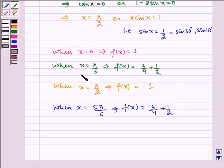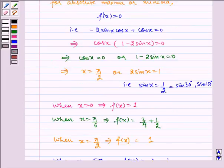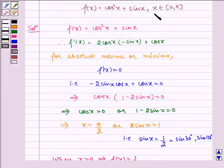When x equals π/2 then f(x) equals 1. When x equals π then f(x) equals 1. We will take the different values of x till π only because it is given that x belongs to the closed interval 0 and π.